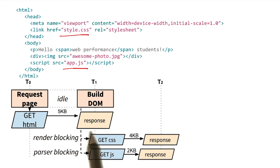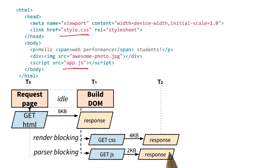Once again, we get the HTML and discover CSS and JavaScript resources and initiate those requests. Note that the JavaScript file is a bit smaller than the CSS, so it may arrive sooner. But JavaScript is blocked on the CSS being parsed, right?